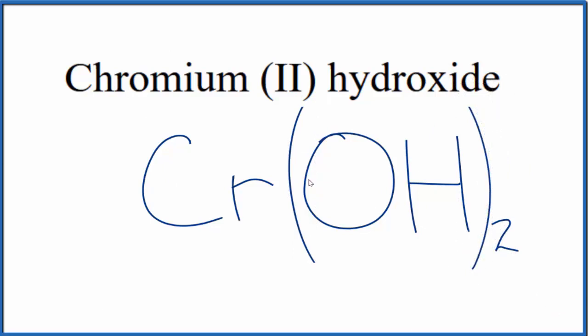So this is the formula for chromium two hydroxide, Cr(OH)2. This is Dr. B, and thanks for watching.